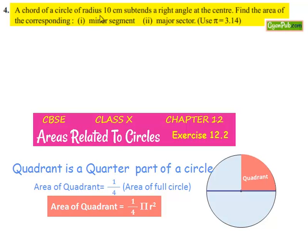Moving on to the fourth question: A chord of a circle of radius 10 cm subtends a right angle at the center. Find the area of the corresponding minor segment and major sector.